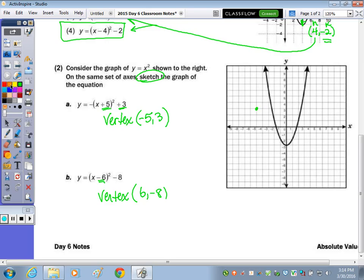And the opposite of a negative 6 is a positive 6, negative 8. So negative 5, 3. Negative 5, 1, 2, 3. So here's the vertex of this curve. I know it's going to be upside down because of the negative.